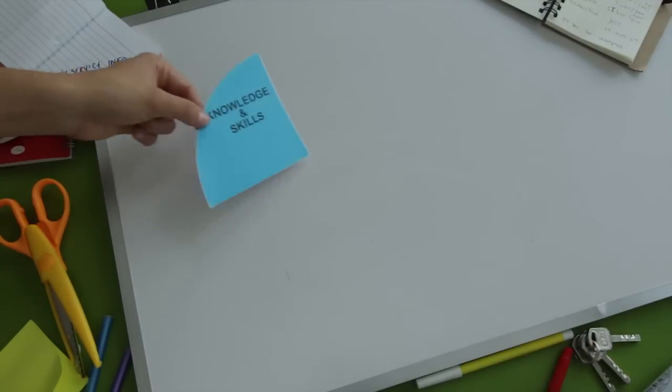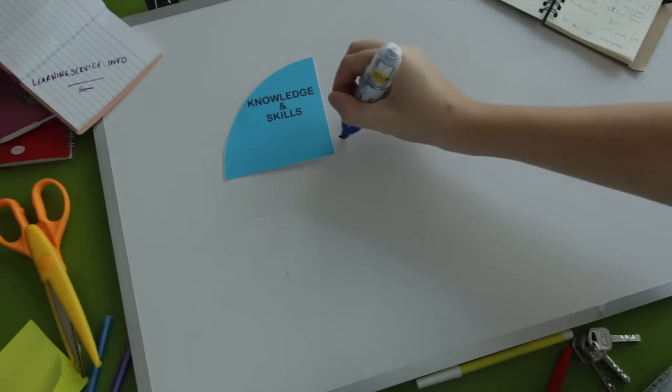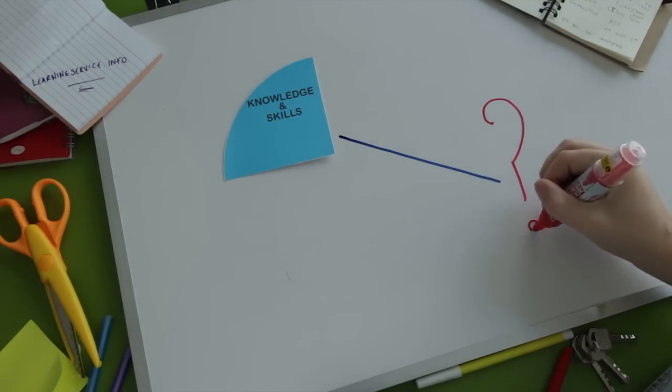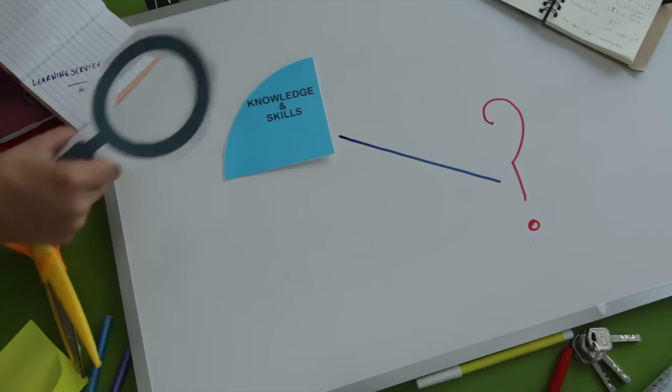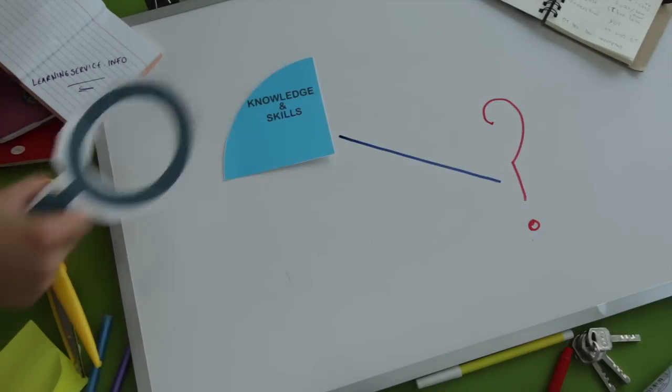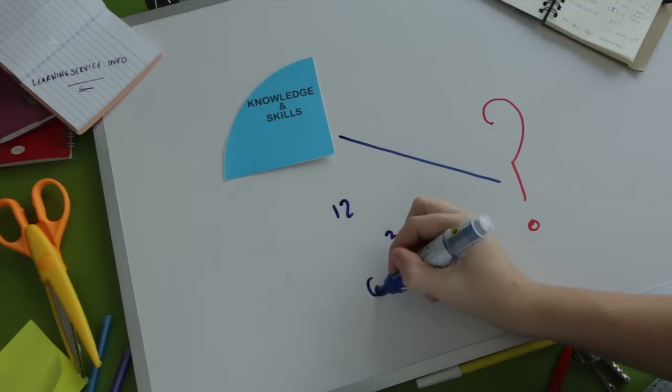The first piece of the model is develop relevant knowledge and skills. Doing good starts with asking the right questions, doing the right research, and developing the right skills so we can effectively contribute our time.